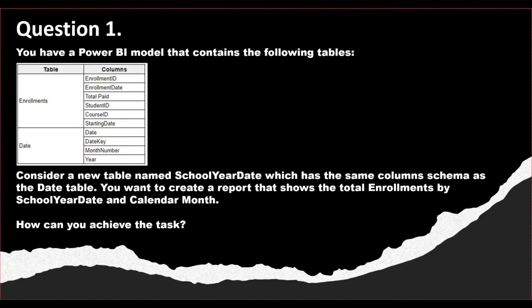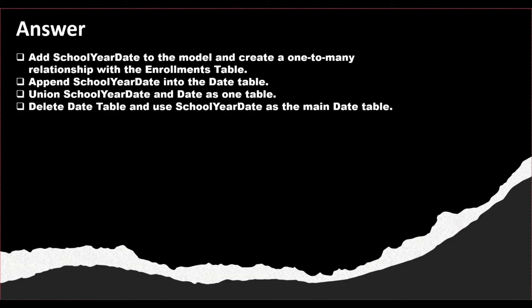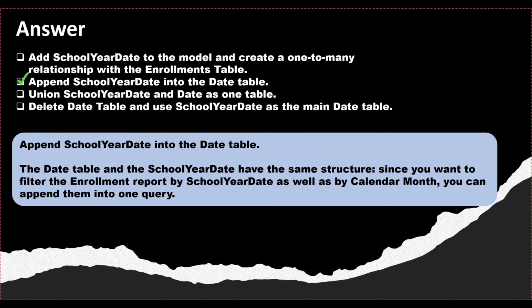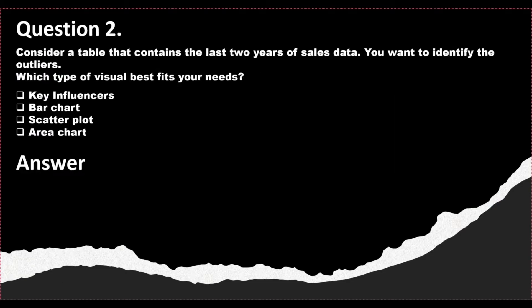The options available are: add School Year Date to the model and create a one-to-many relationship with the Enrollments table; append School Year Date into the Date table; union School Year Date and Date as one table; or delete the Date table and use School Year Date as the main date table. The correct answer is to append School Year Date into the Date table. Since the Date table and School Year Date have the same structure, and you want to filter the enrollment report by school year date as well as calendar month, you can append them into one query.